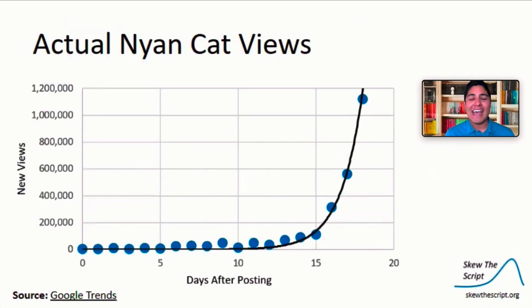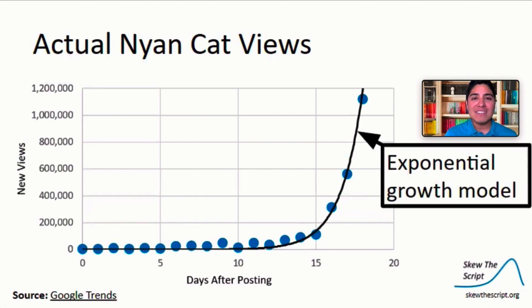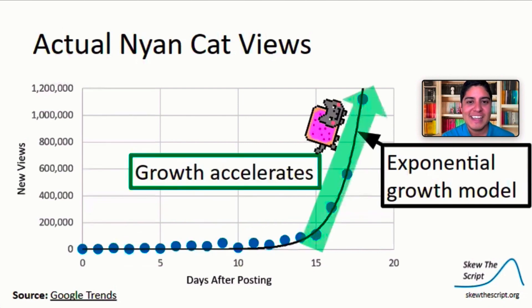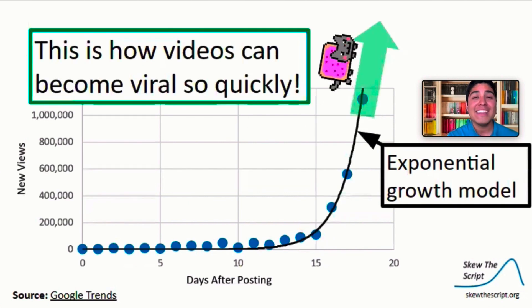Here are the actual views that Nyan Cat received after each day. What we see here is called exponential growth. The black curve you see is a model that's been fit to the data to show the trend over time. Again, notice how growth is slow at first, and then the growth accelerates as time passes on. This is how videos can become viral so quickly.